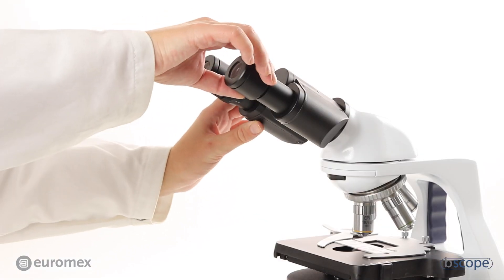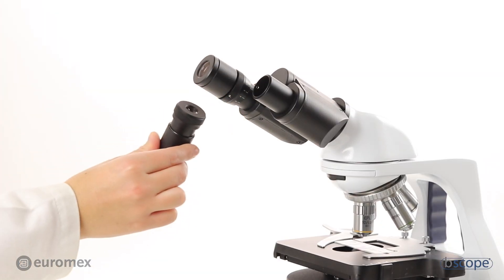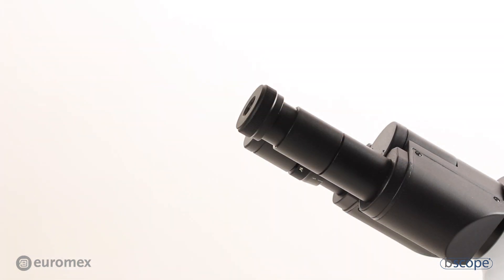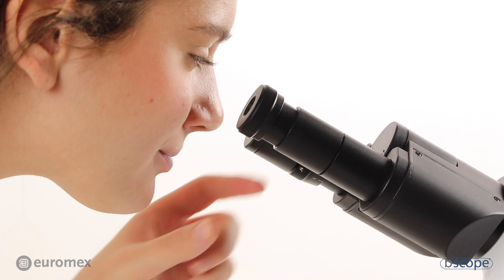Take one eyepiece out and replace it with the provided telescope. Focus the telescope on the iris of the condenser.